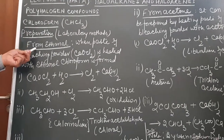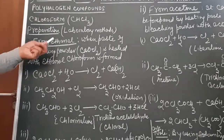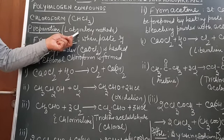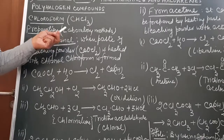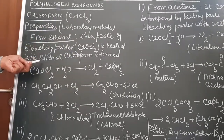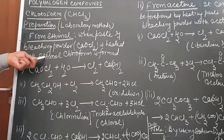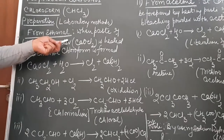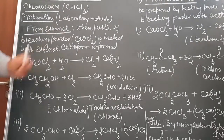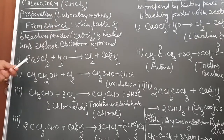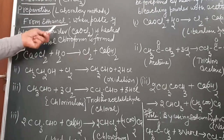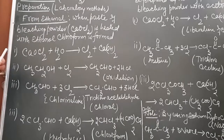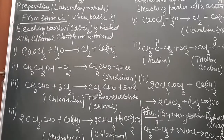How do we prepare chloroform? Laboratory method of preparation of chloroform: it can be prepared by treating alcohol with bleaching powder. So when alcohols are treated with bleaching powder, the formation of chloroform will take place.